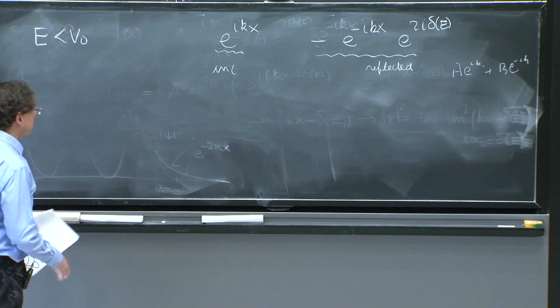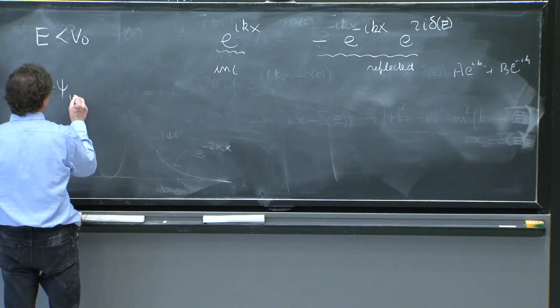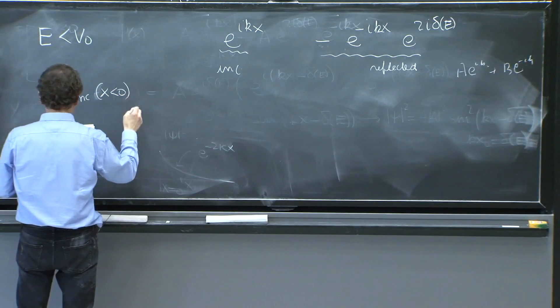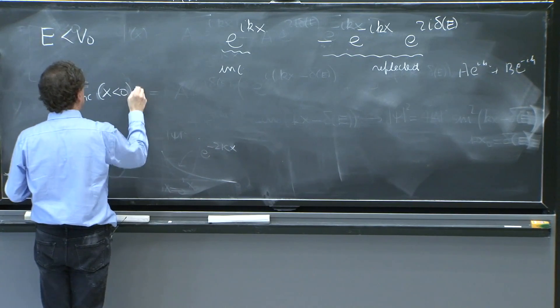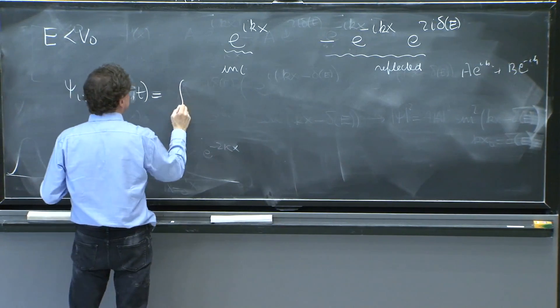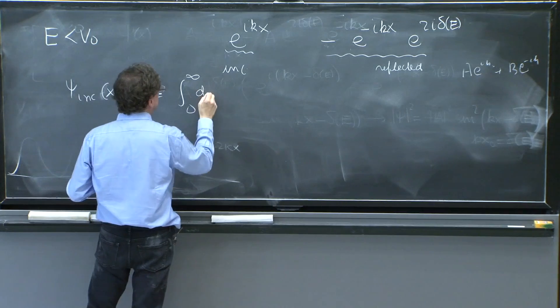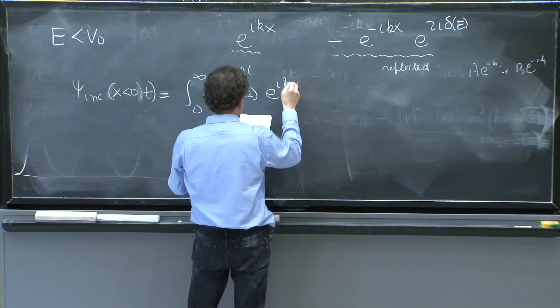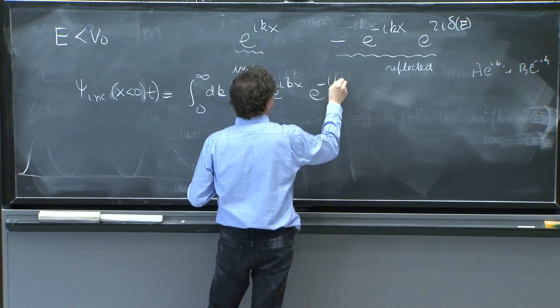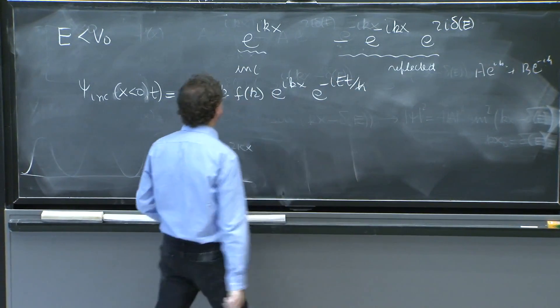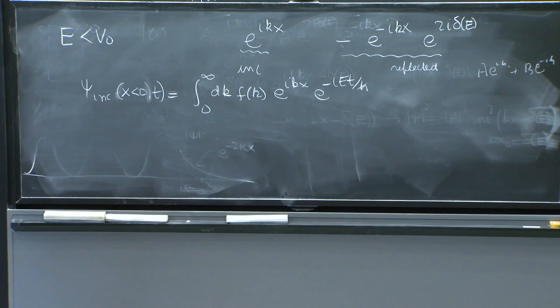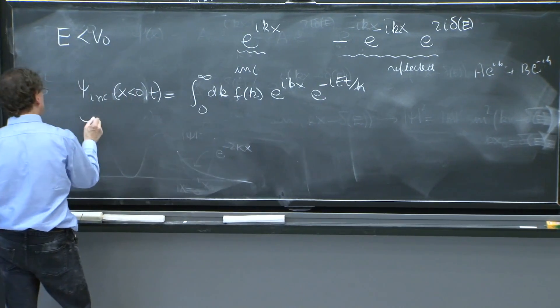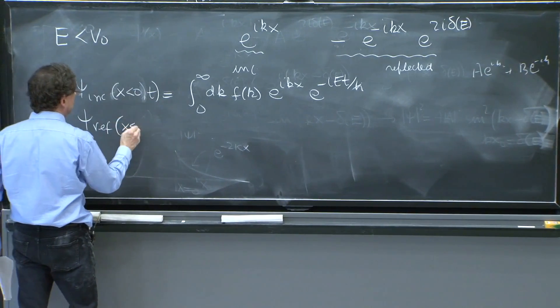So suppose I construct a psi incident of x less than 0 and t as a sum 0 to infinity dk f of k e to the ikx e to the minus iet over h bar. So I superpose the incident thing here. Then the reflected one should be superimposed, too.